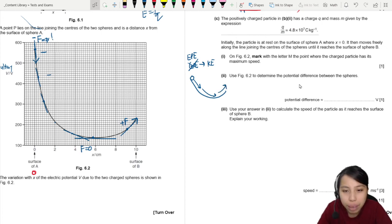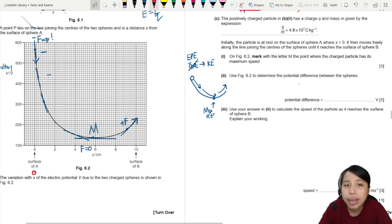And then of course, after that, it will go up, but it will slow down a little bit. So the place where you have the maximum speed is the lowest point. Max KE. So on our graph, that will be right here, M. You draw M there at the lowest point. That is one mark.